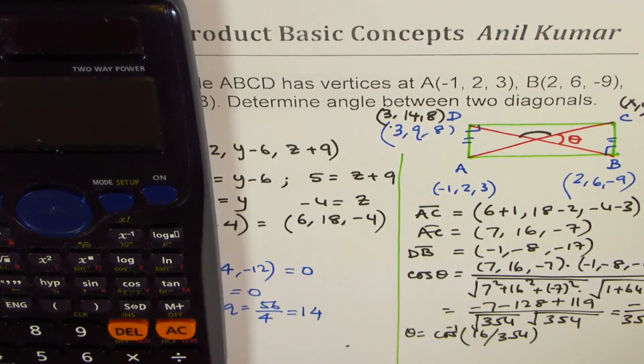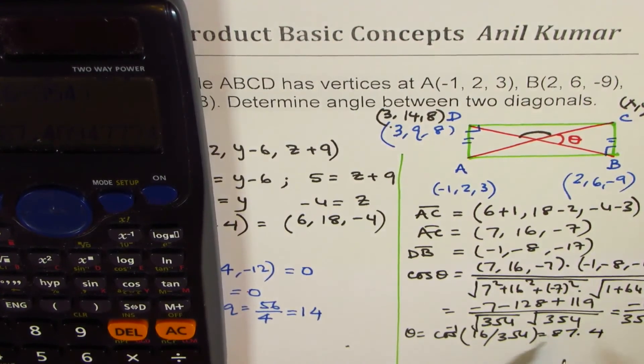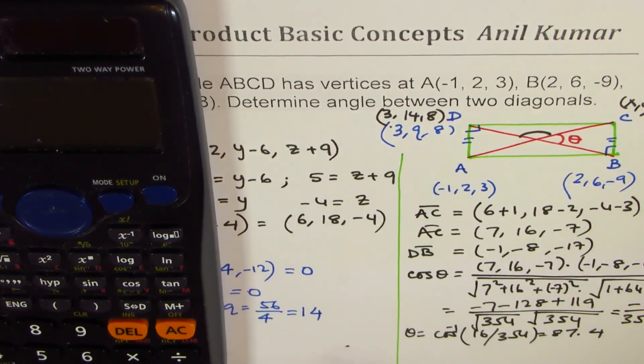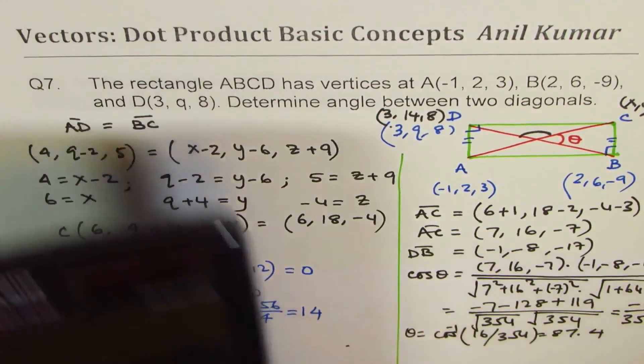So we get cos⁻¹(16/354) = 87.4°. So that becomes the acute angle. The other angle is 180-87.4 = 92.6°.